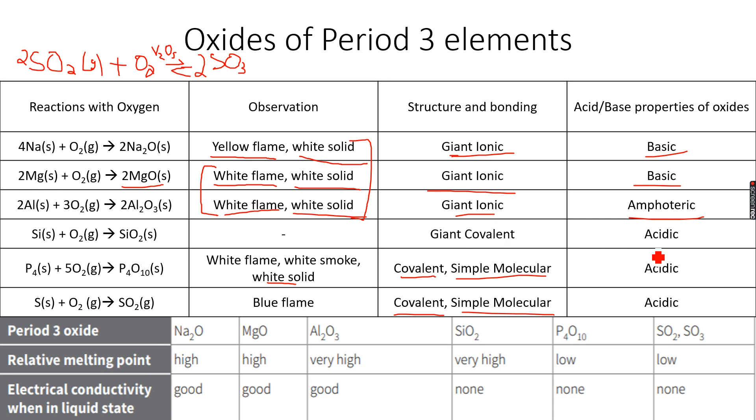Silicon dioxide is acidic in nature. Silicon oxide or silicon dioxide, it's actually called silicon oxide but it should be silicon dioxide, it's acidic in nature. Then phosphorus oxide P4O10 is also acidic in nature. And sulfur dioxide is also acidic in nature. And sulfur trioxide is also acidic in nature.